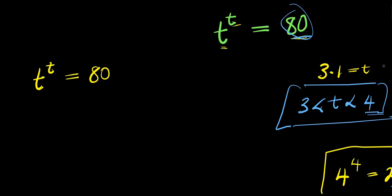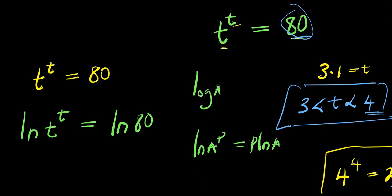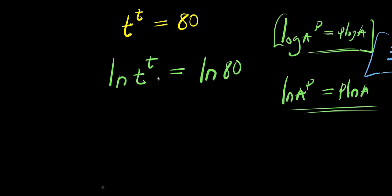So let's do it the right way. We can take the natural log of both sides: natural log of t to the power of t equals natural log of 80. Now, when you have natural log of a to the power of p, this is p times natural log of a, because the log of a power p is p times log a. So based on this property of log, we apply the same property of natural log, and we are going to have t times natural log of t equals natural log of 80.